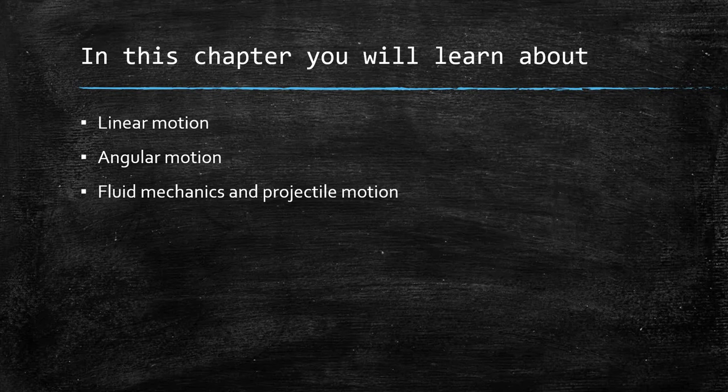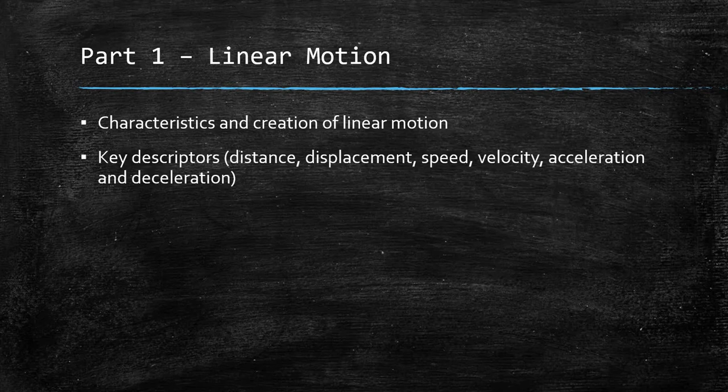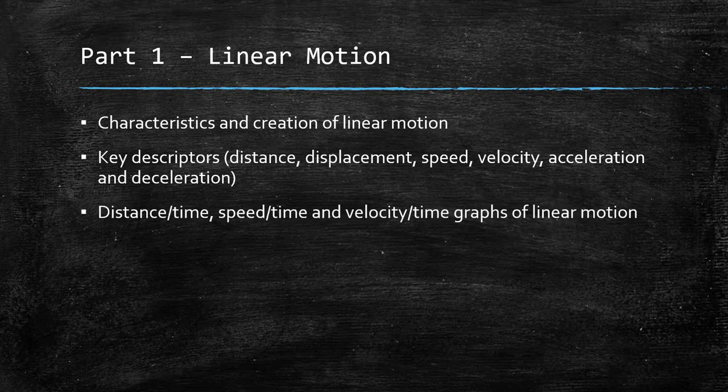So this video is about linear motion. We're going to look at the characteristics and how linear motion is created. We will look at key descriptors — distance, displacement, speed, velocity, acceleration and deceleration — in a little bit more detail. We will also look at how to draw graphs of linear motion, which is a key skill you will need to know for your exam. So let's get started.